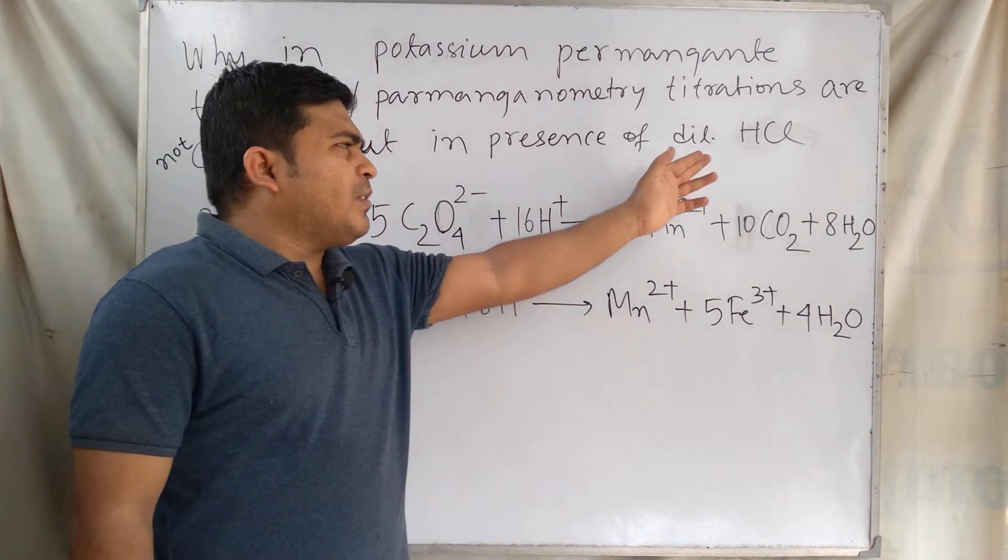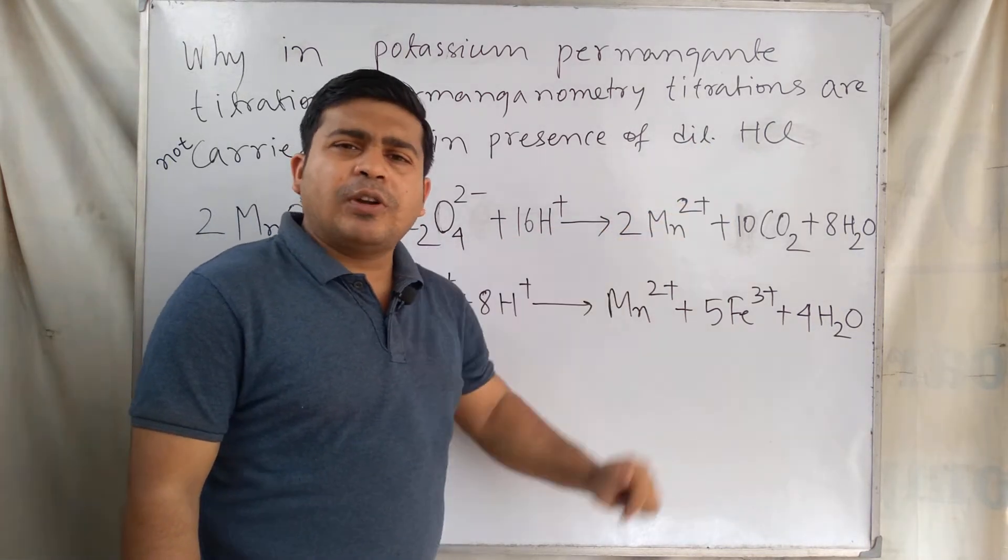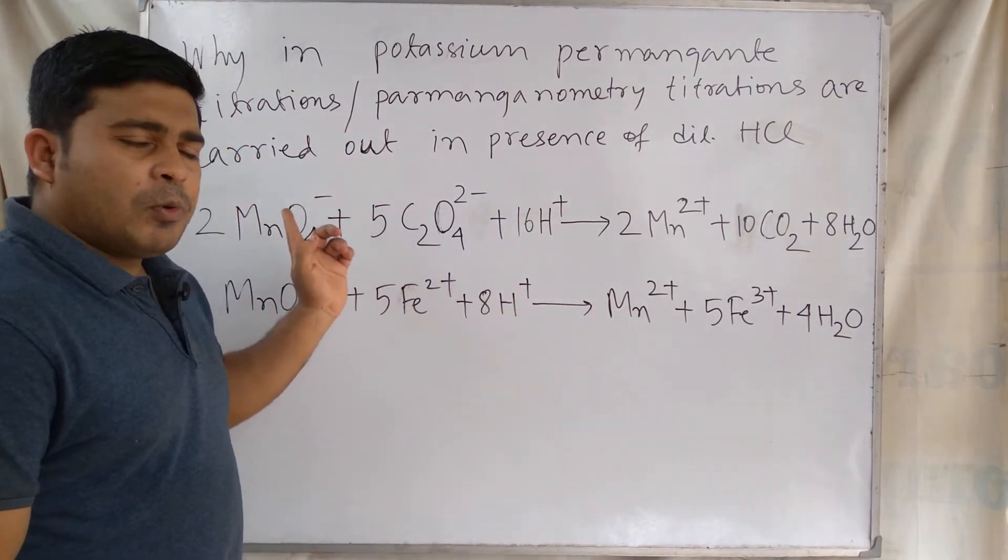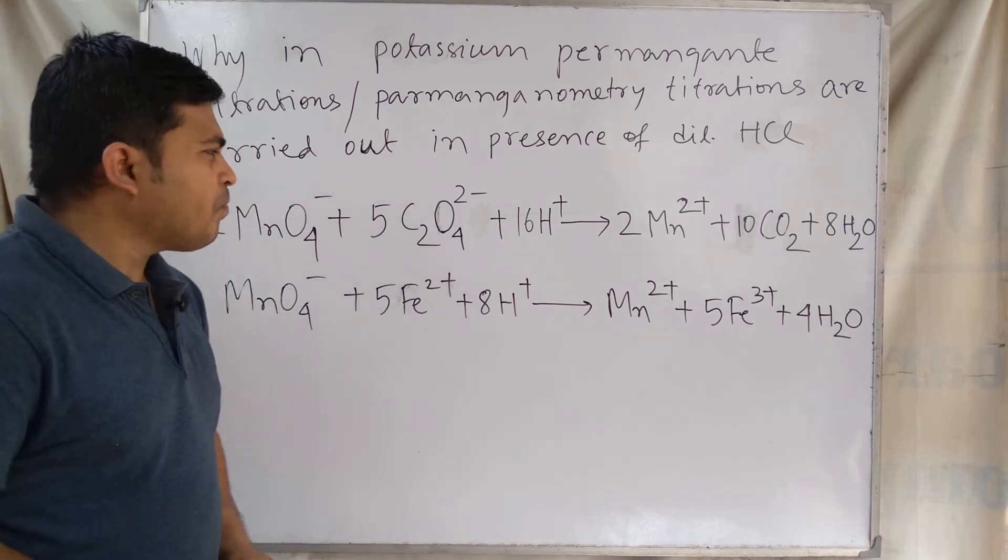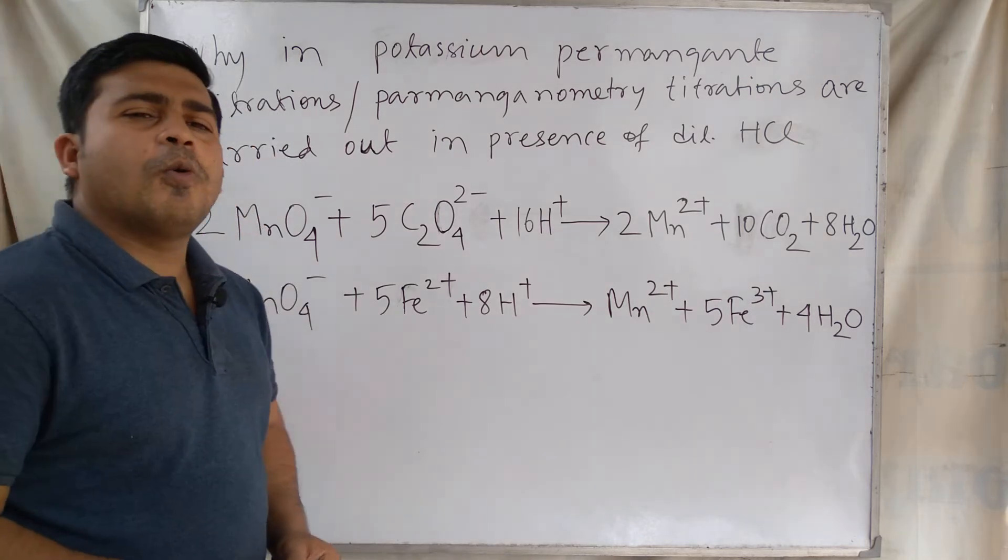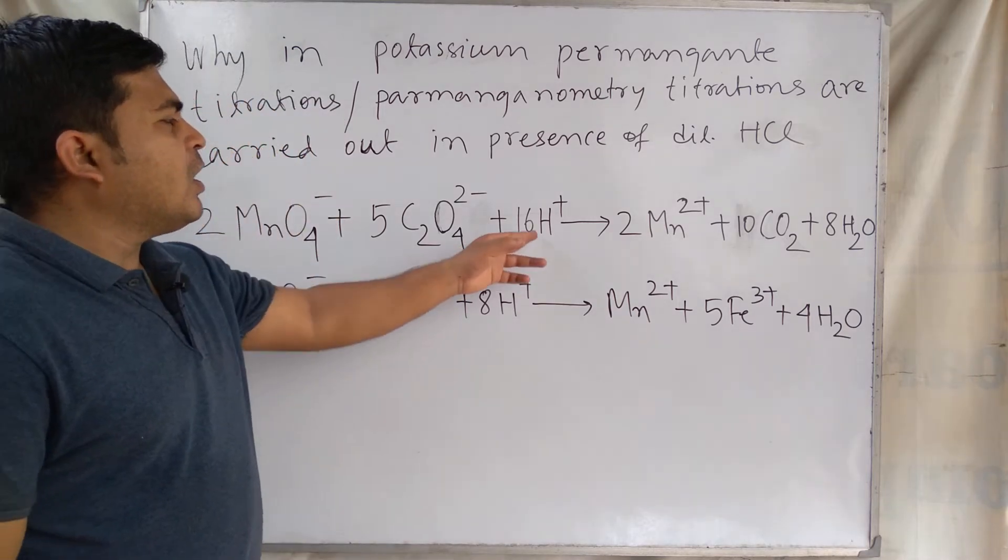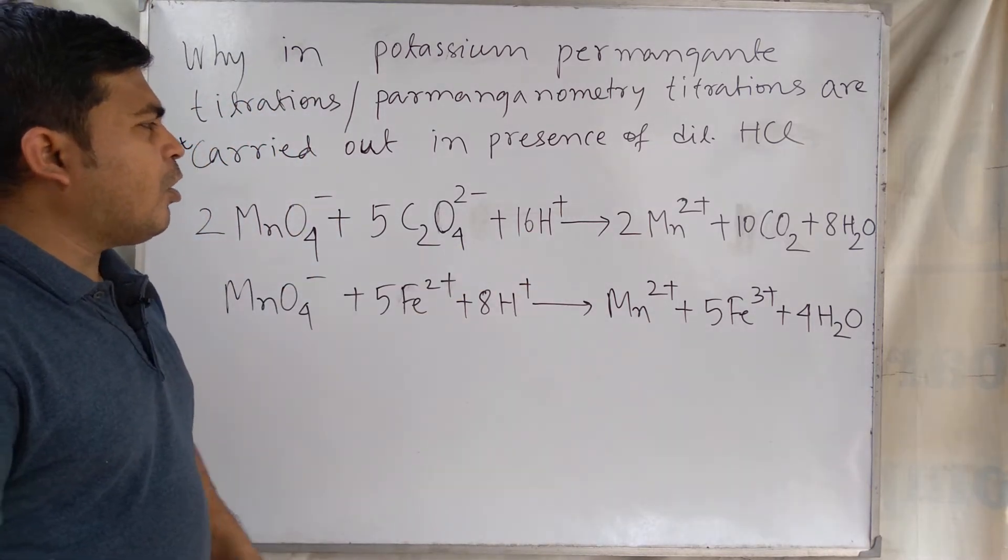The question is, can we use dilute hydrochloric acid in place of acid that is used in potassium permanganate titrations? The answer is no, we cannot use dilute hydrochloric acid in place of dilute sulfuric acid.